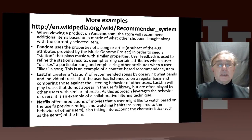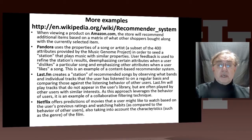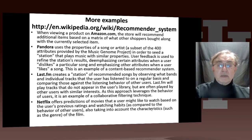They basically try to weight the different attributes to optimize the chance of making a good prediction. This is called a content- or property-based recommender system.